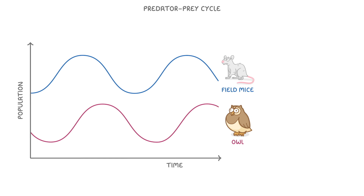It can be a bit hard to see, but if you draw a line, you can see that the mouse population peaks here, but the owl population doesn't peak until a bit later, just here. Because of this lag, we say that they're out of phase with each other.